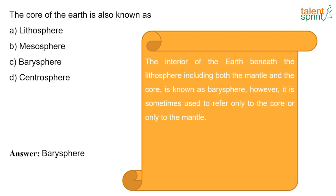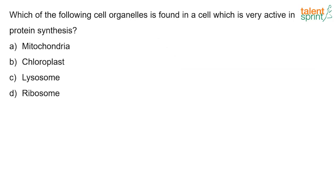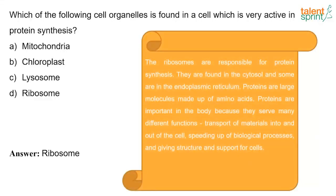Which cell organelle is found in a cell very active in protein synthesis? The answer is ribosome. Ribosomes are responsible for protein synthesis. They are found in the cytosol and some are in the endoplasmic reticulum. Proteins are large molecules made up of amino acids and are important in the body because they serve many functions: transportation of materials into and out of the cell, speeding up biological processes, and giving structure and support to cells.